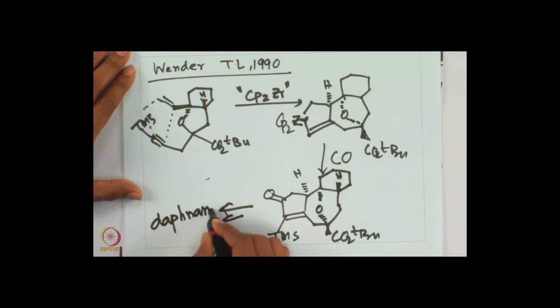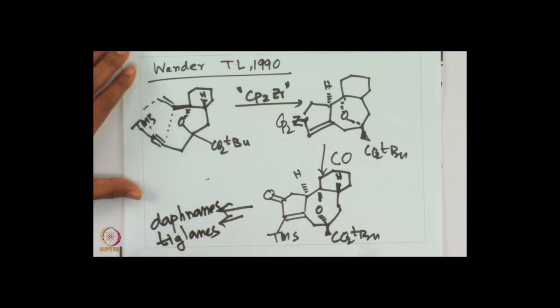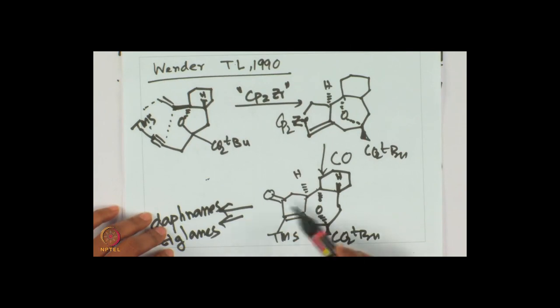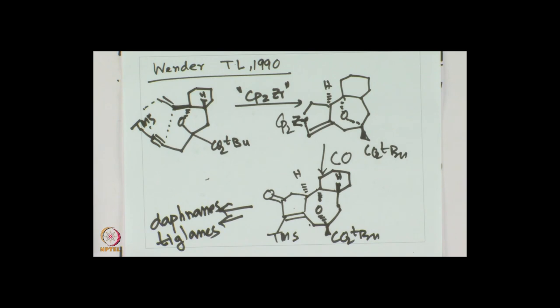The natural products Daphnanes and Tiglanes can be synthesized by utilizing this technique. This is a very powerful technique. Although this process is not great for tolerating different functional groups, we have seen that esters are tolerated, and olefin and alkyne are put together to form a 5-membered ring coupled with a 7-membered heterocycle, and altogether 5-, 7-, and 6-membered heterocycles are put together by utilizing this technique.